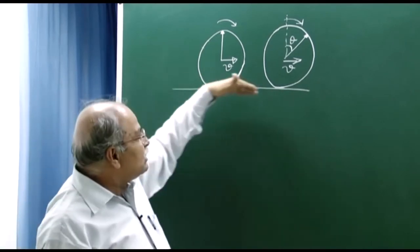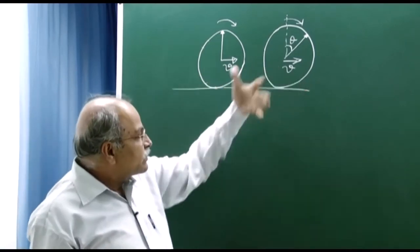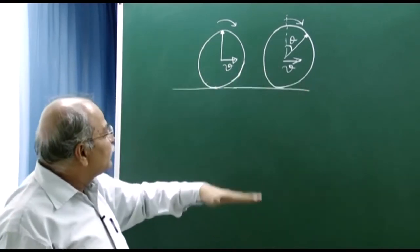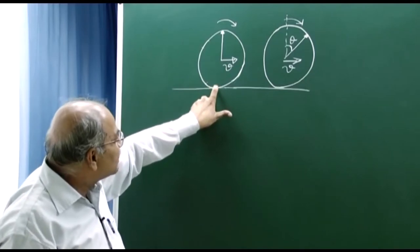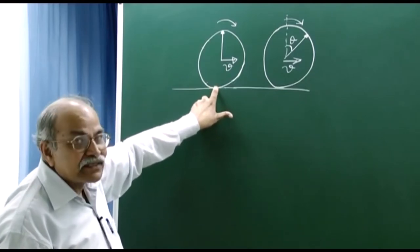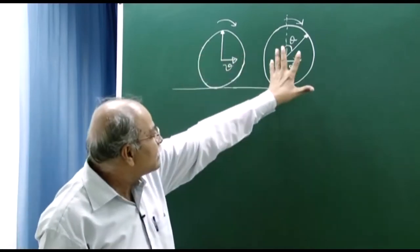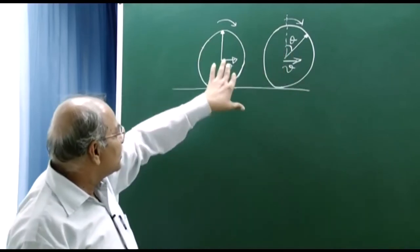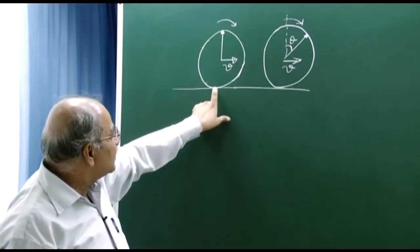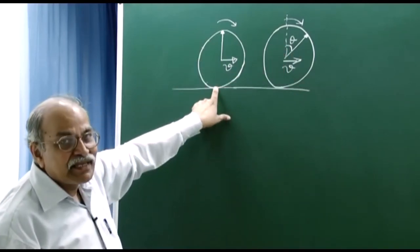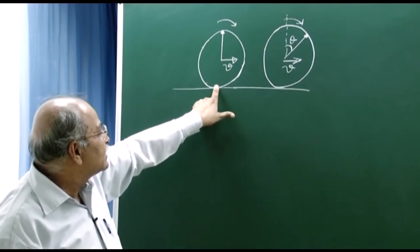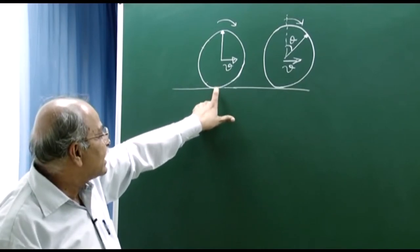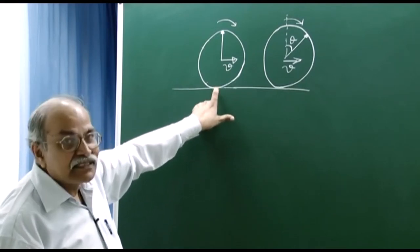This rotation and translation are related by a very special equation that ensures at the contact point the surfaces are not slipping over each other. The velocity of the upper surface and velocity of the lower surface must be the same so there is no slipping — that is the definition of rolling motion. If the road is at rest, then the contact point of the wheel must also be at rest. There should be no slipping between the two surfaces.